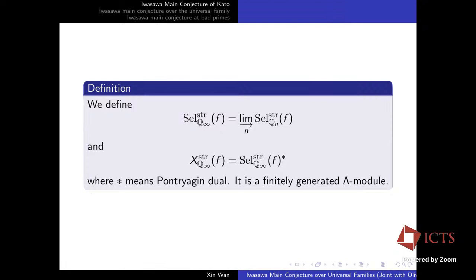The Pontryagin dual means we take the space of continuous homomorphisms from the module to Q_p/Z_p. It is known that this dual Selmer group is a finitely generated Λ-module, since every module over Q_∞ comes equipped with an action of Γ, which is the Galois group of Q_∞ over Q. So each such module is a module over Λ, and it is known to be finitely generated.